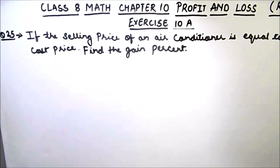Hello everyone, in this video we are going to solve question 25 of exercise 10A, Profit and Loss, of Class 8 Math by R.D. Sharma. The question says: if the selling price of an air conditioner is equal to 1 1/3 of its cost price, find the gain percent.